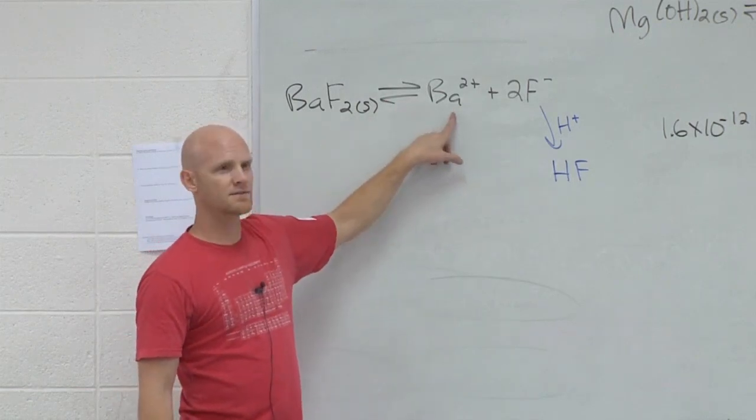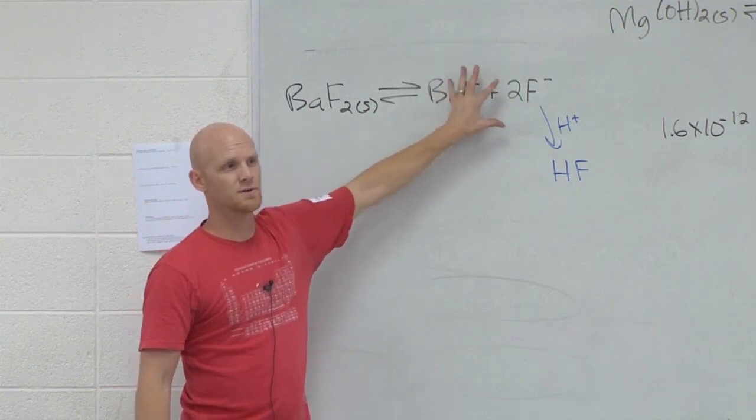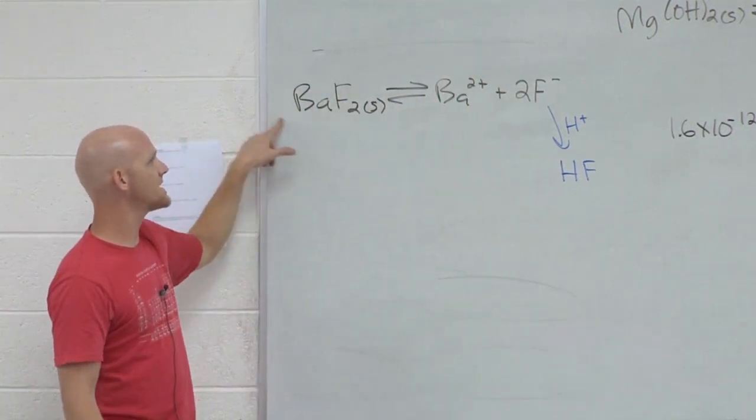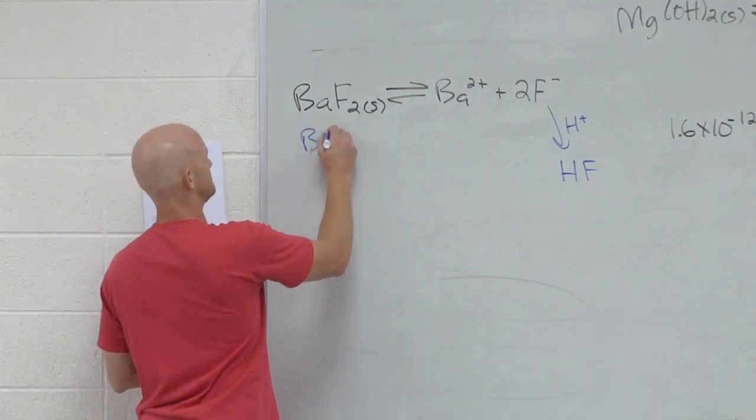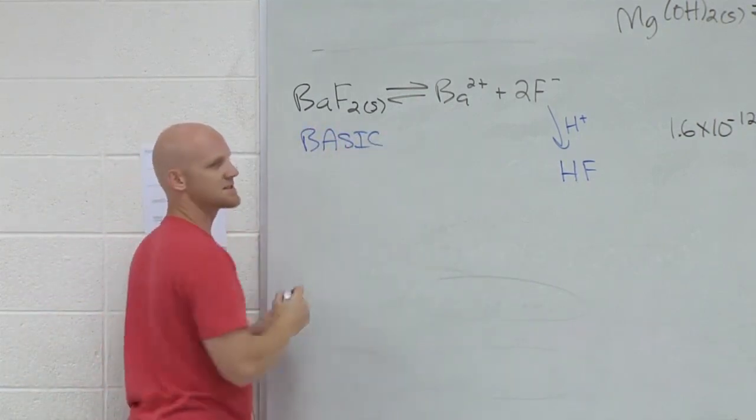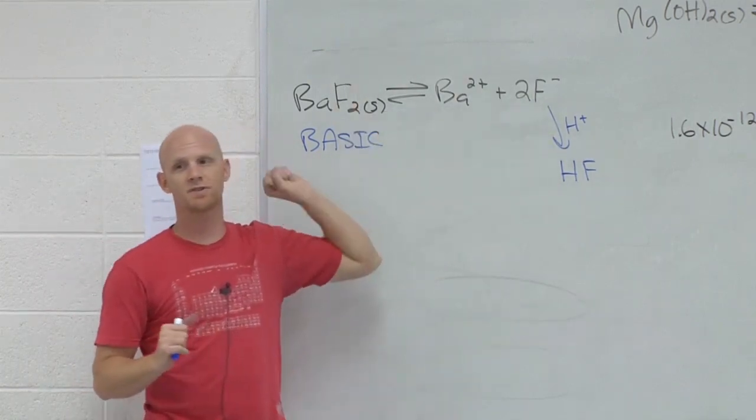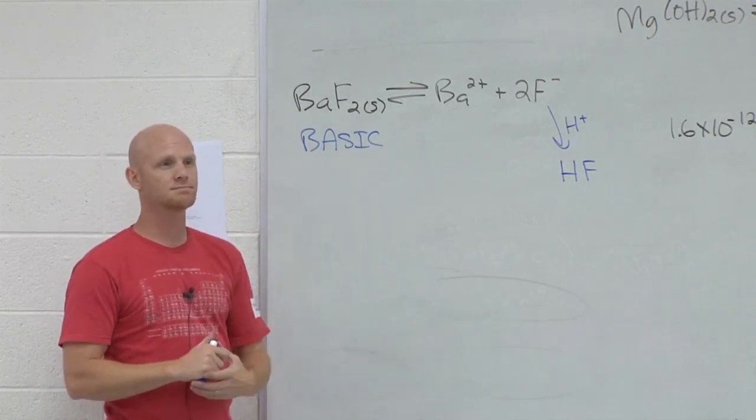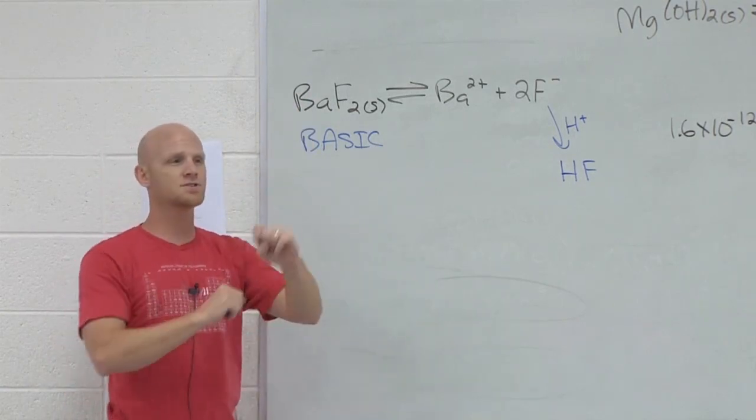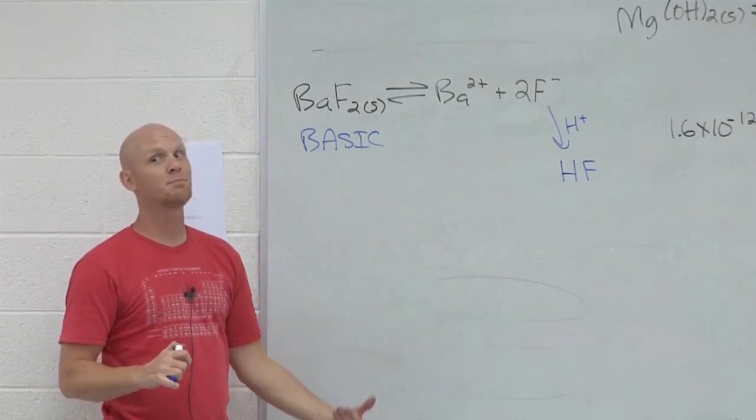So notice barium ions. They're group two, so they are negligible. And so overall we should have recognized that this is what kind of salt? A basic salt. We've just learned a little demonstration of a larger principle. Basic salts are more soluble when you add what? Acid. The converse is also true. A basic salt is less soluble when you add base.